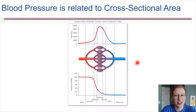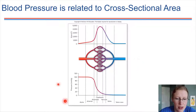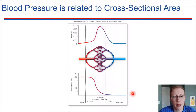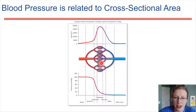This helps explain why arteries are pressurized and veins are not — it's in part due to the presence of the capillaries. This graph maps out the pressure drop and the cross-sectional area. The capillaries are very small, but there are a lot of them, so in total there is a high cross-sectional area at that point.